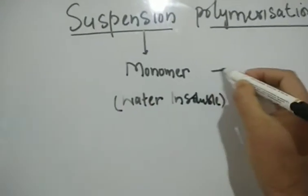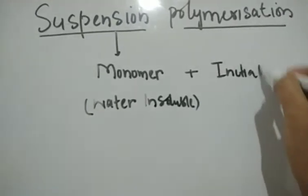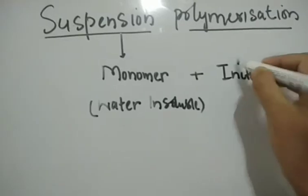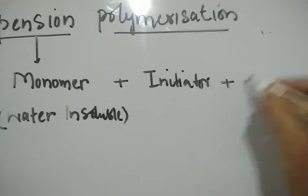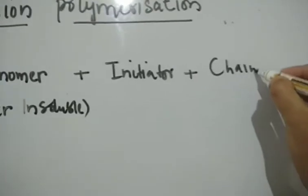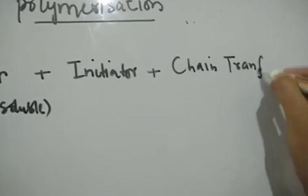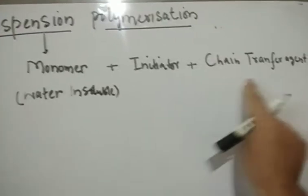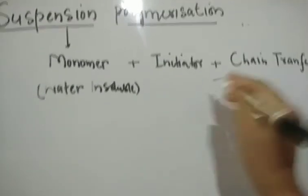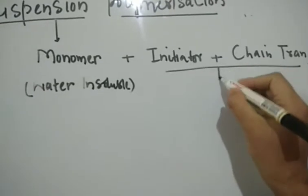The monomer is mixed with the initiator. Initiator, as we have said before, is used to initiate the polymerization reaction - it's a chemical reagent. And then chain transfer agent. The important thing is that initiator and chain transfer agent are also immiscible. These two are also insoluble or immiscible in water.